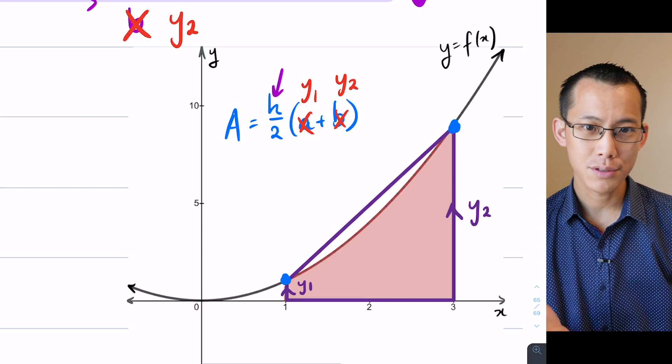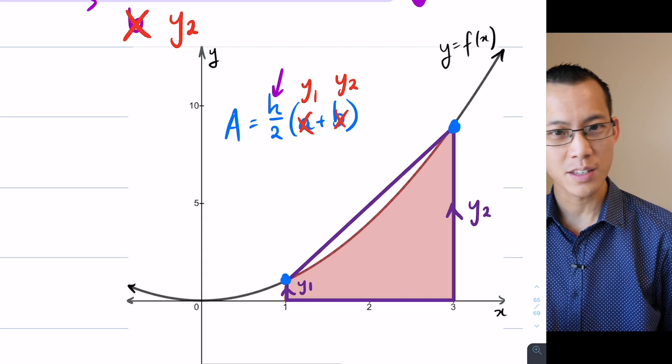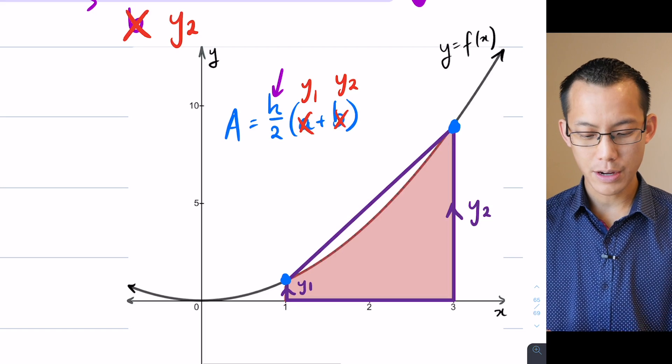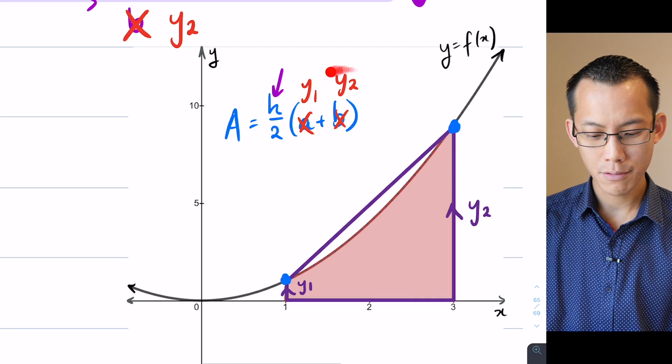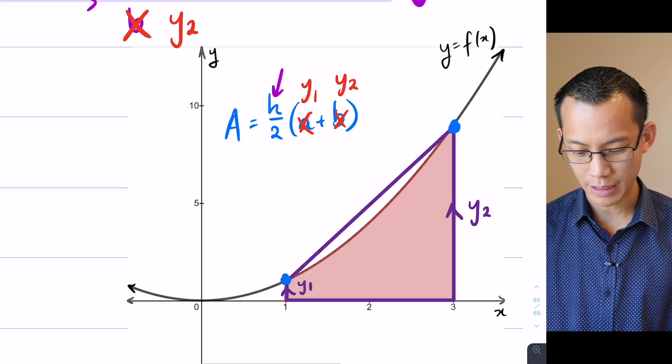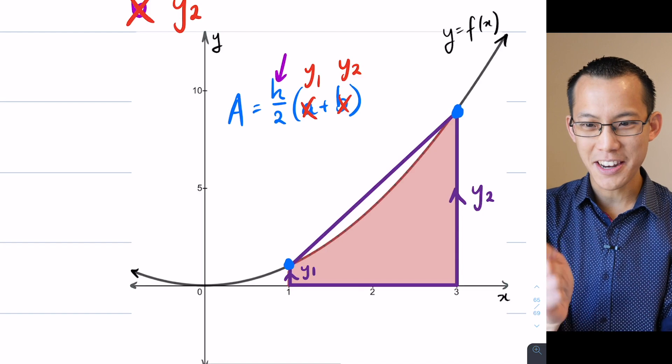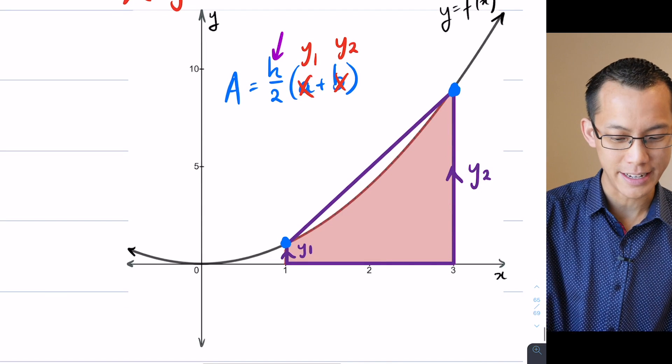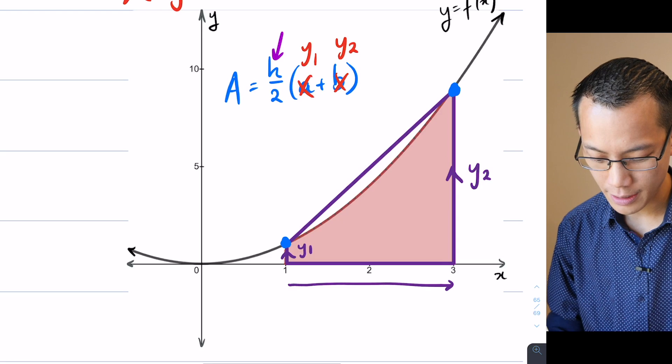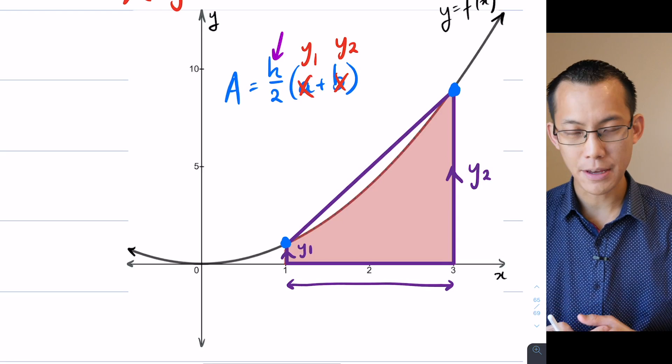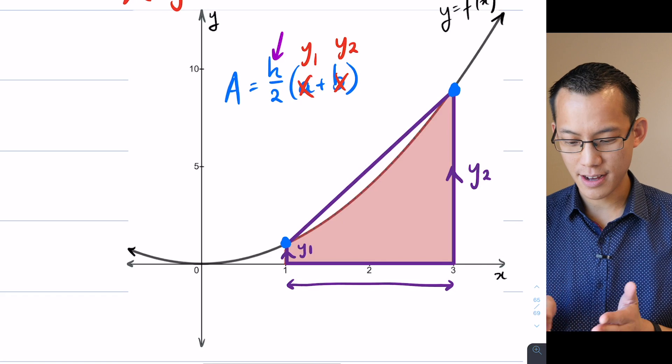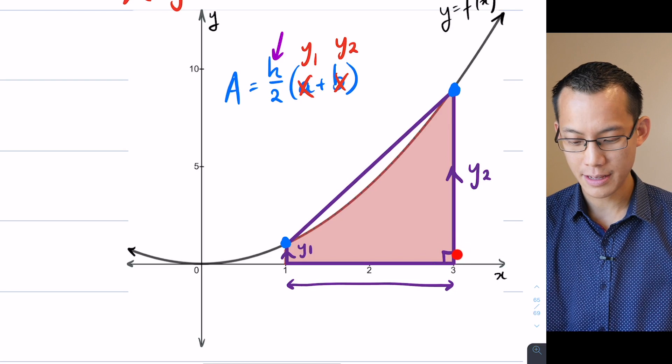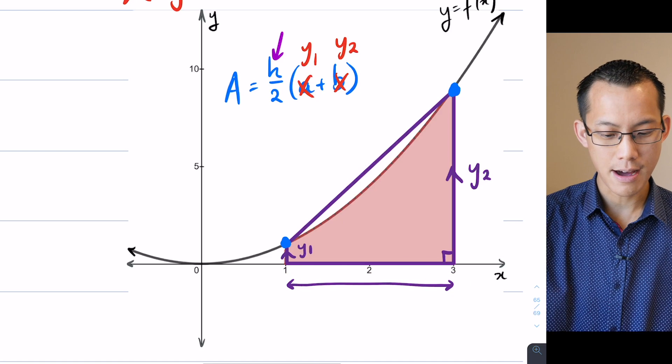Now once you've got that, hopefully this tells you you're now going to have to look at this trapezium sideways. This is why top and bottom is not the best way to describe Y1 and Y2 - it's about them being parallel. So now the only other question is, if I've got Y1 and I've got Y2, what's h? Where is H on this diagram? Can anyone tell me where h is going to be found?